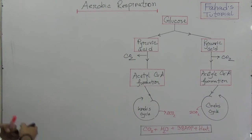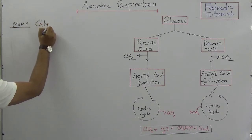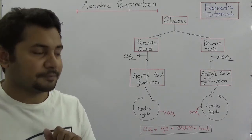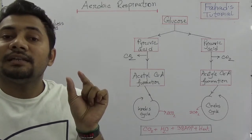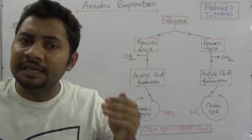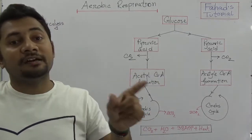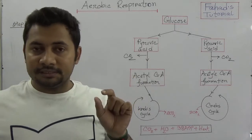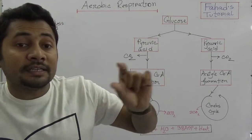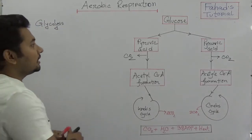Step number one is glycolysis. From this word, 'glyco' is a short form of glucose and 'lysis' means breakdown, so it means that in this phase of aerobic respiration — glycolysis is actually the common step of both aerobic and anaerobic respiration — glucose will be broken down. The chronology of this process is the main issue of this tutorial.